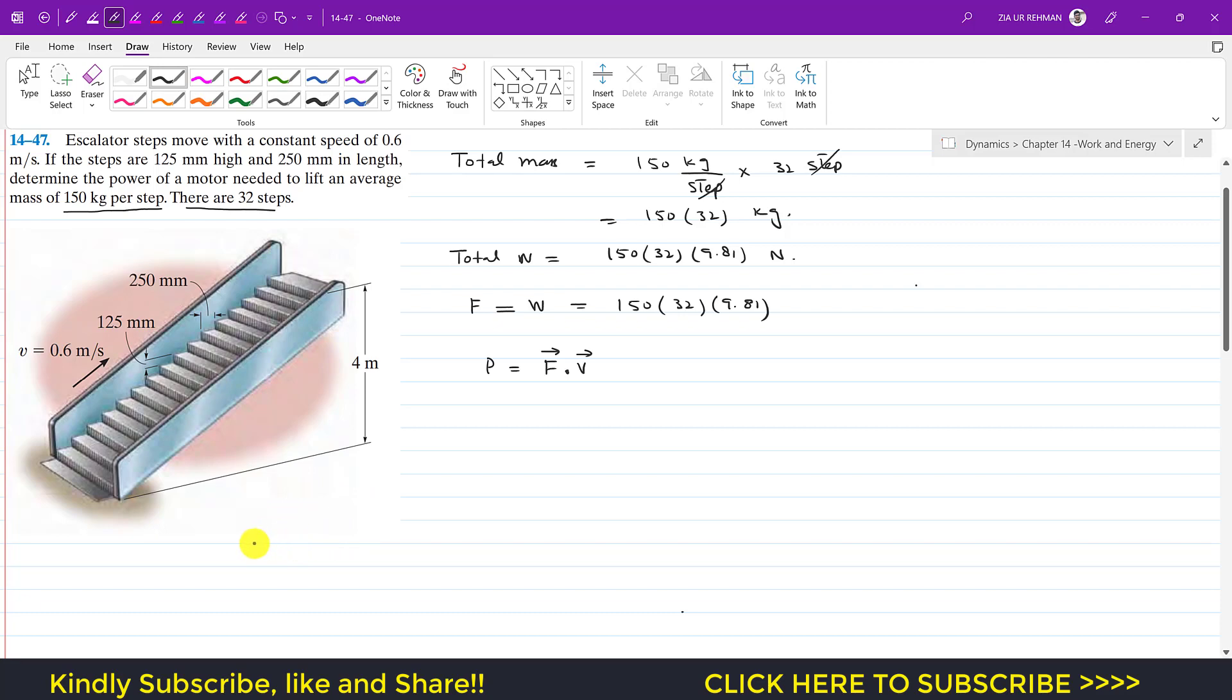So if I draw the free body diagram, if I draw the front view, if this is my escalator and this is 4 meters, we can find this length. This length must be equal to 32, since we have 32 steps and each step has a length of 250 mm.